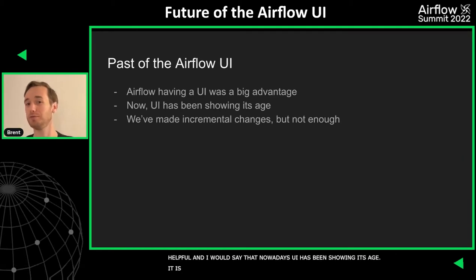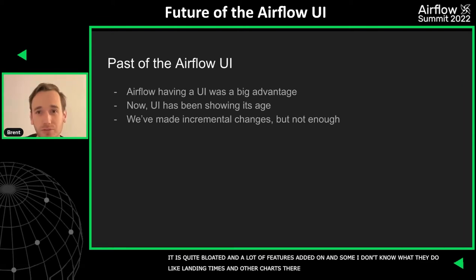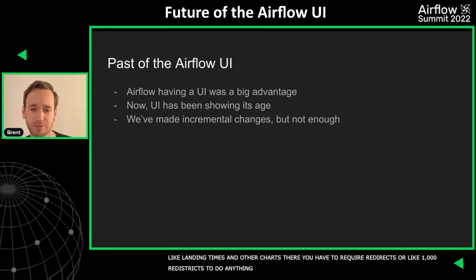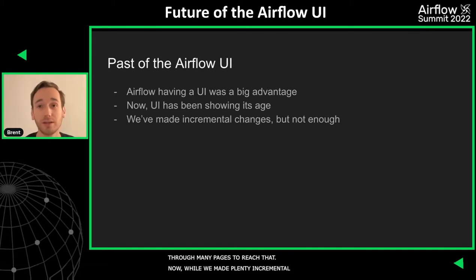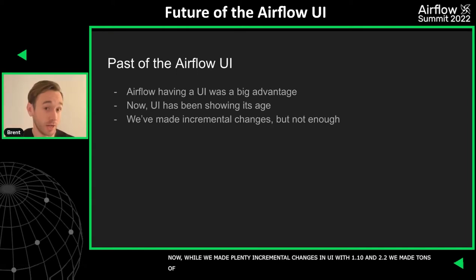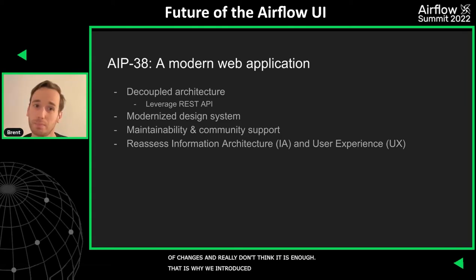It is quite bloated with the different features that have been added on. There are quite a few things that I honestly don't really know what they do, like the landing times or some other charts. You require like a thousand redirects to do anything, or just to see the logs of your task you have to go through many pages. And while we've made plenty of incremental changes — if you look at the UI from 1.10 to 2.2 we made tons of changes — I really don't think it's enough.